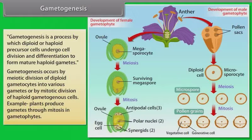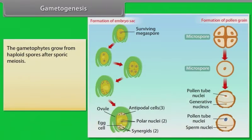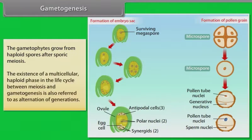Plants produce gametes through mitosis in gametophytes. The gametophytes grow from haploid spores after sporic meiosis. The existence of a multicellular haploid phase in the life cycle between meiosis and gametogenesis is also referred to as alternation of generations.